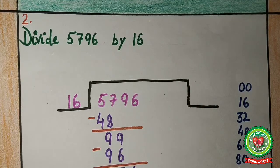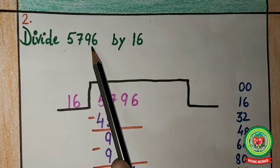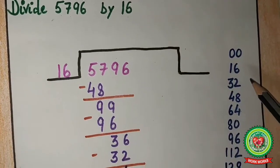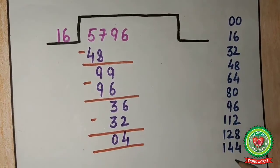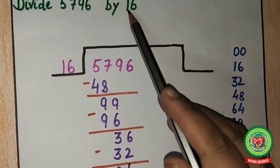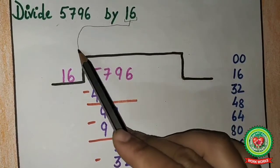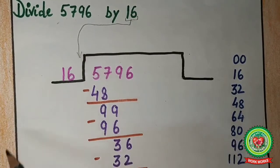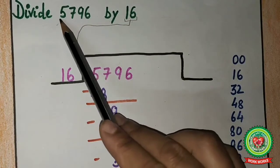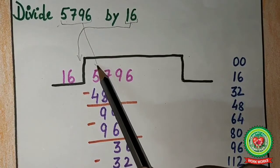Next is double digit division. Divide 5796 by 16. First, write the table of 16 from 0 to 9. Now, 16 is your divisor — it comes outside the divide sign. 5796 is your dividend — it comes inside the divide sign.